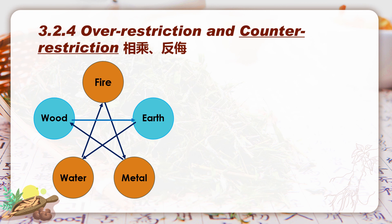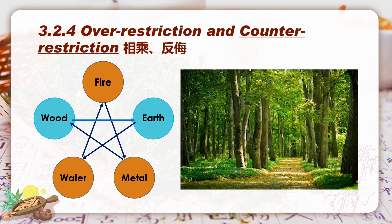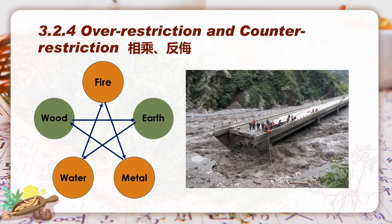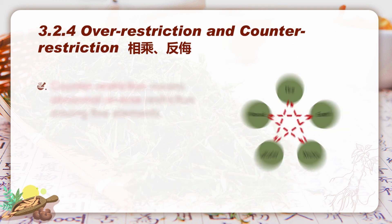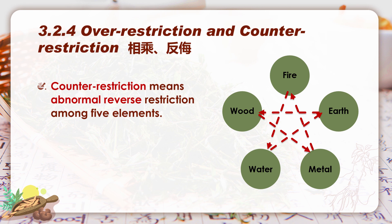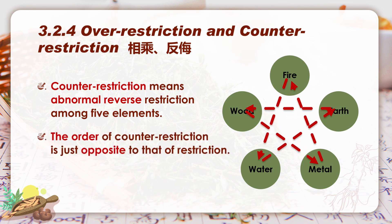Counter-restriction is a reverse of normal restriction. For example, normal restriction has wood controlling earth — people plant trees and forests to protect the environment. However, debris flow is one of the disasters caused by over-cutting; it is due to wood getting too weak, incurring a counteract from earth. This is counter-restriction. Therefore, counter-restriction means abnormal reverse restriction among five elements, and its order is just opposite to that of restriction. The causes for counter-restriction can be either one element getting too strong or too weak. That's all for today, and we will discuss the application of five elements theory in TCM in the next section.